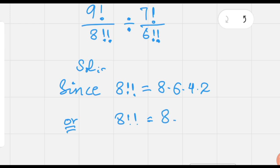So 8 double factorial can be further written as 8 times 6 double factorial.